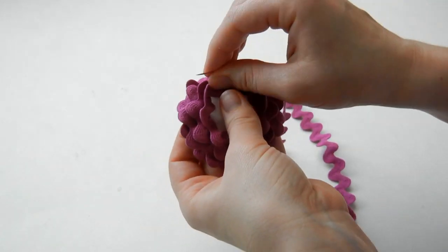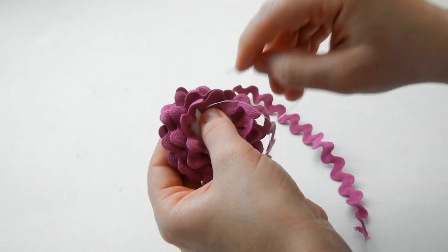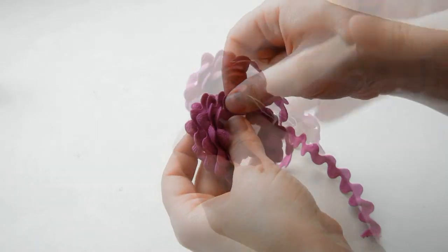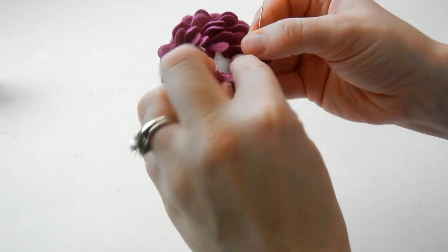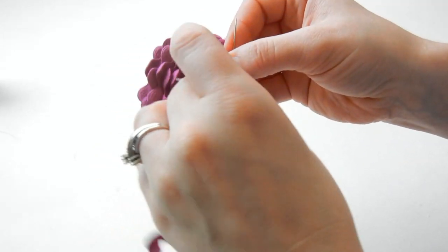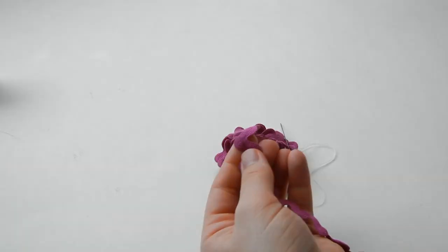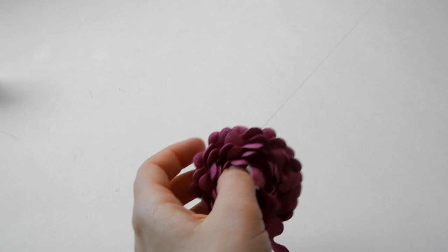As you get towards the middle, it gets a little bit more difficult because the rickrack wants to fold in, but that's part of the cute look. So I'm going to end it probably right there, so I'm going to cut off this part of the rickrack so it's easier to hold.